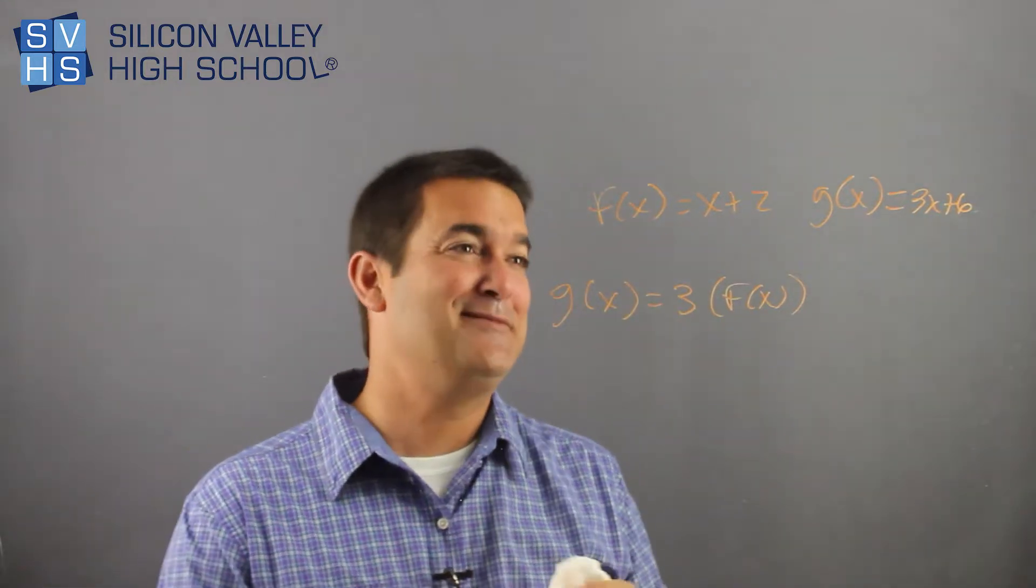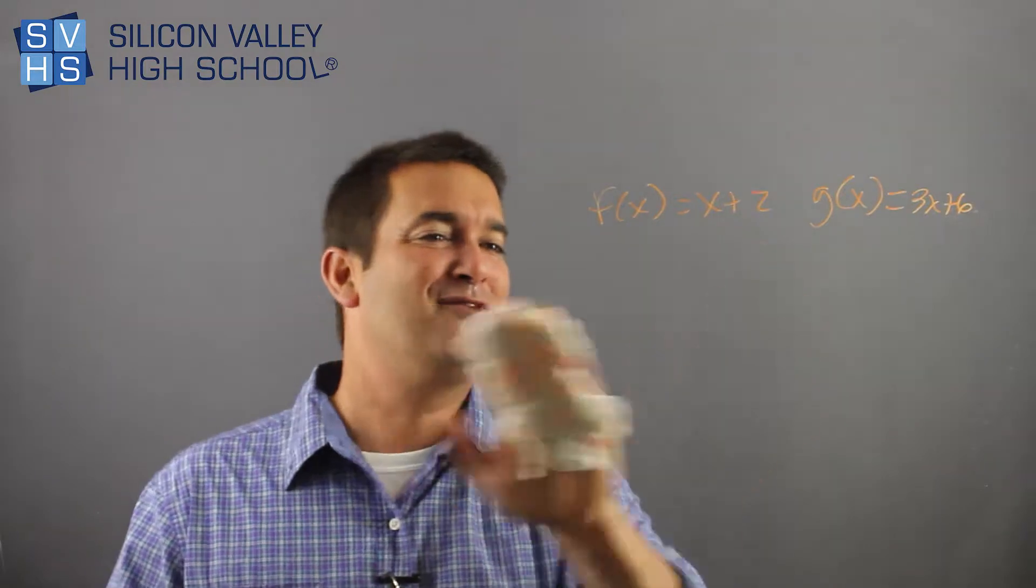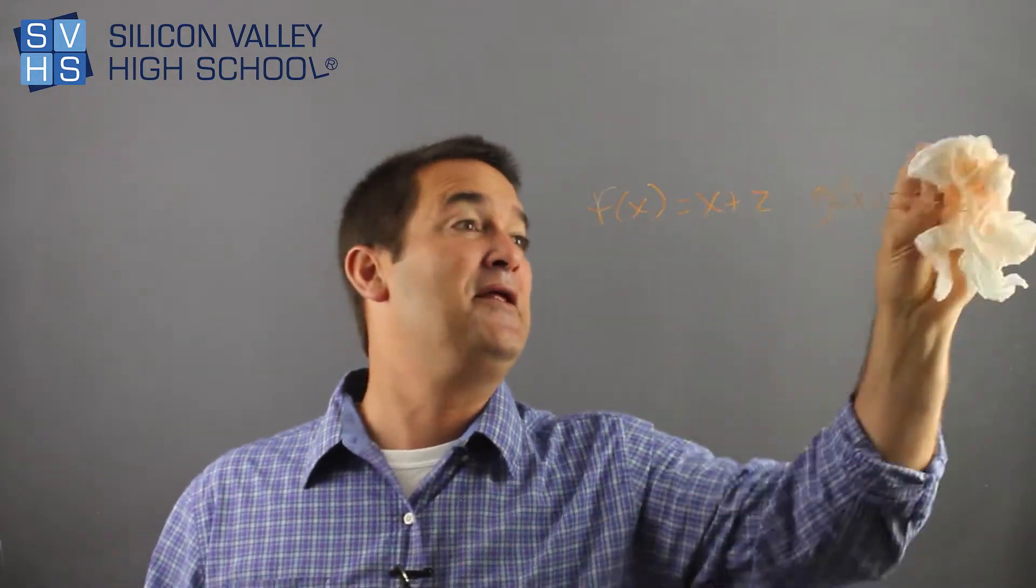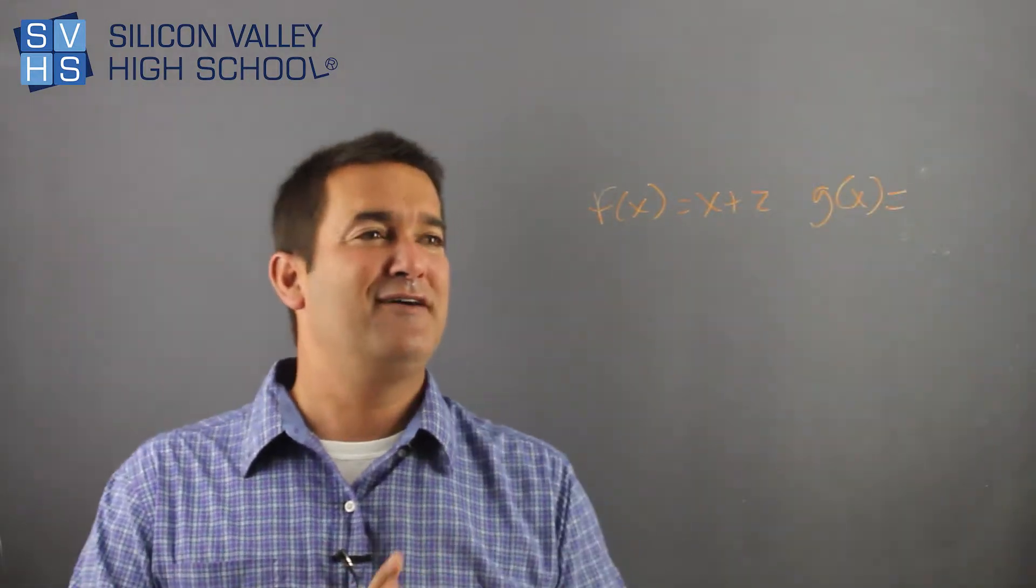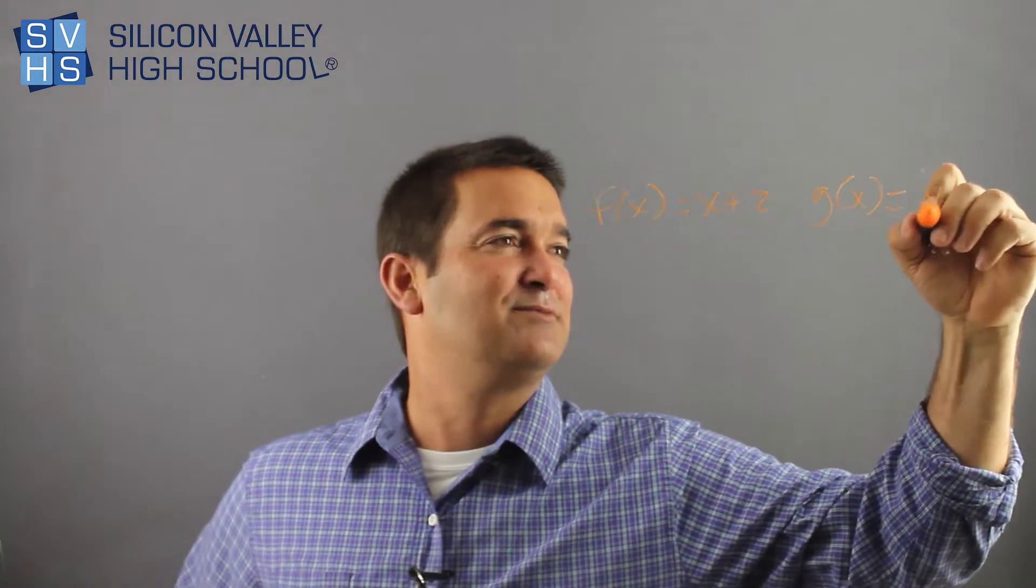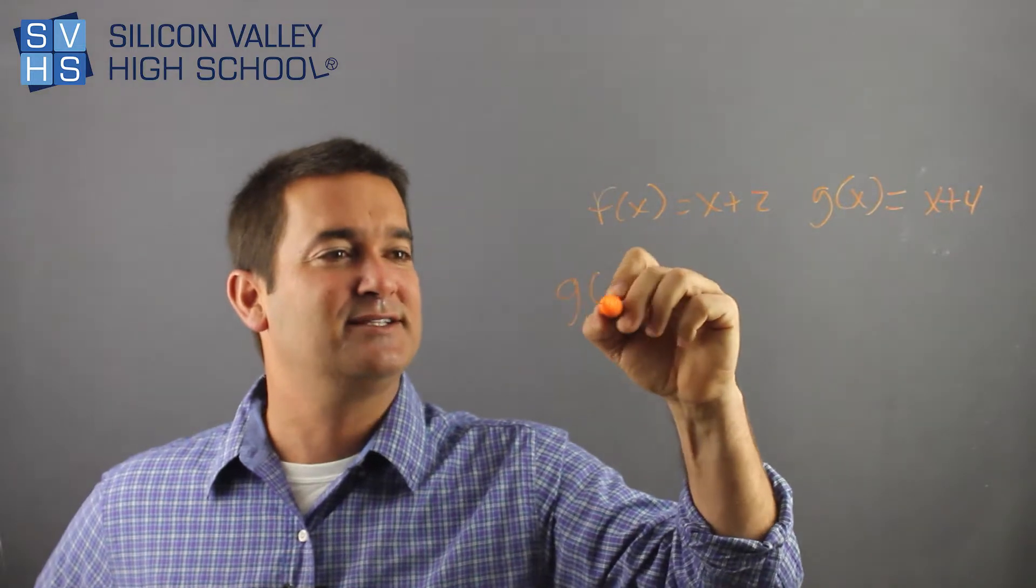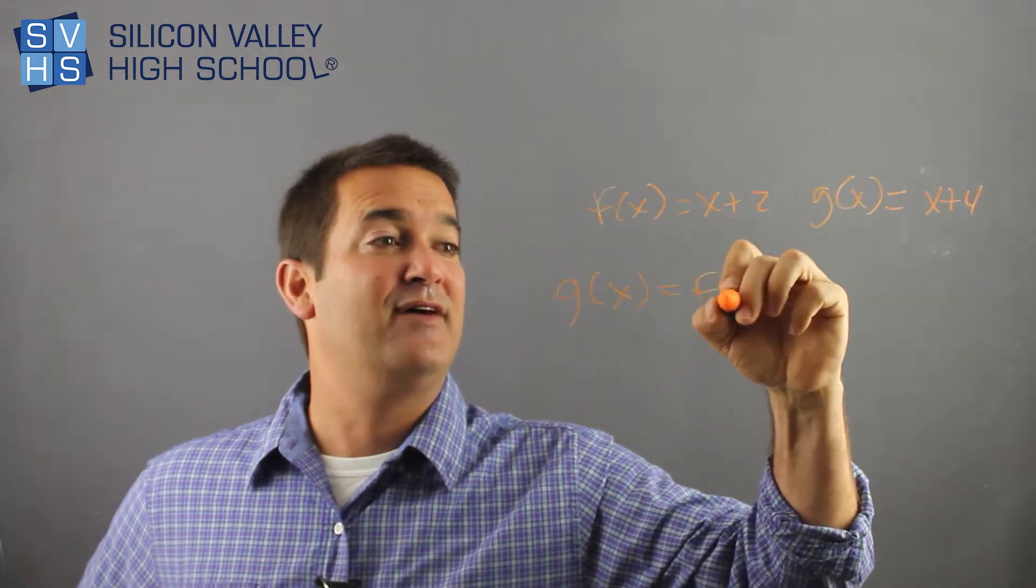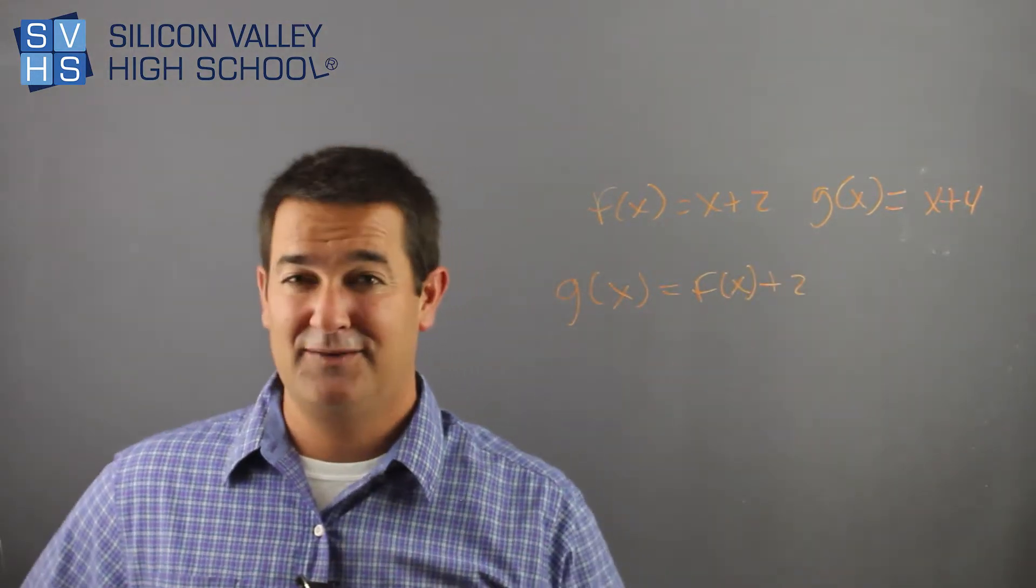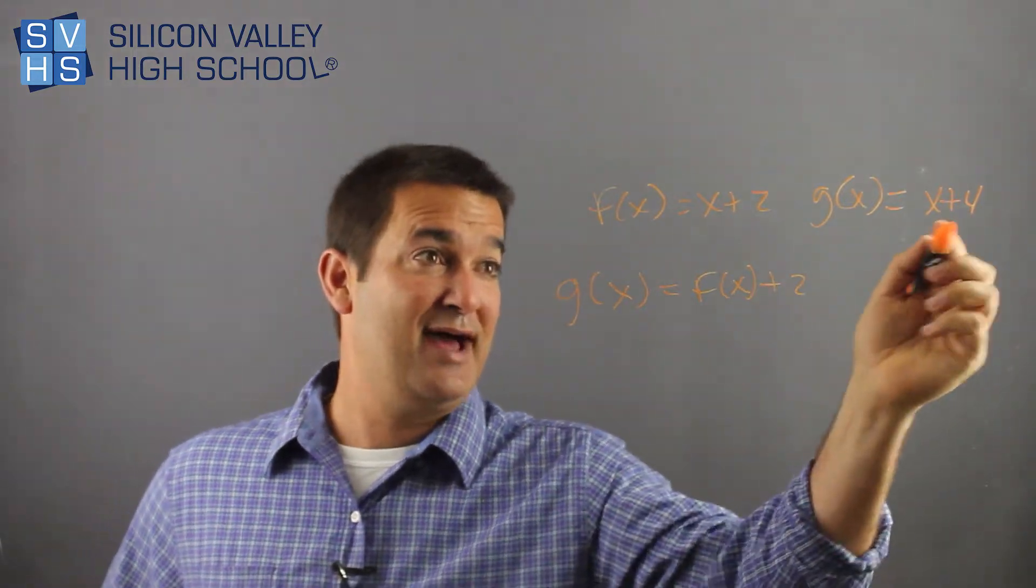Did you hate that one? All right, let me do one that's a little more straightforward. Let's say they said, okay, f of x is x plus 2, g of x is x plus 4. You didn't change the slope, but it looks like you went up 2. So g of x would be basically f of x plus 2. That's all. You took the original function, and you added 2.